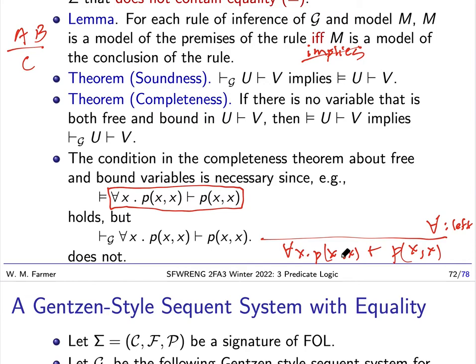Now for all left says I can replace x with any variable that's not free in here, free anywhere else. Well, the variable I want to replace x with is x. That way I can get this. And that will be a logical axiom and I'll be done.